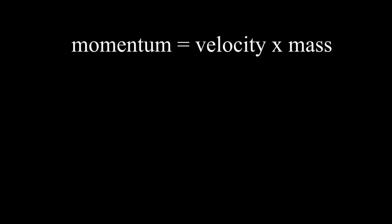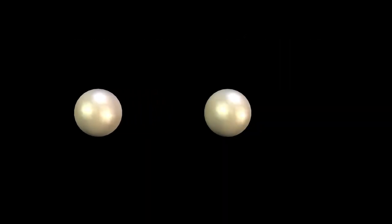The momentum of an object is the product of its velocity times its mass, and linear momentum is a vector quantity. That is, it possesses a direction.